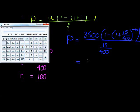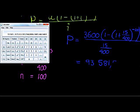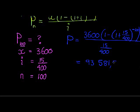Let's see what do we get: 93,581.98 - ninety-three thousand five hundred and eighty-one rand and ninety-eight cents. That is the present value of this annuity.